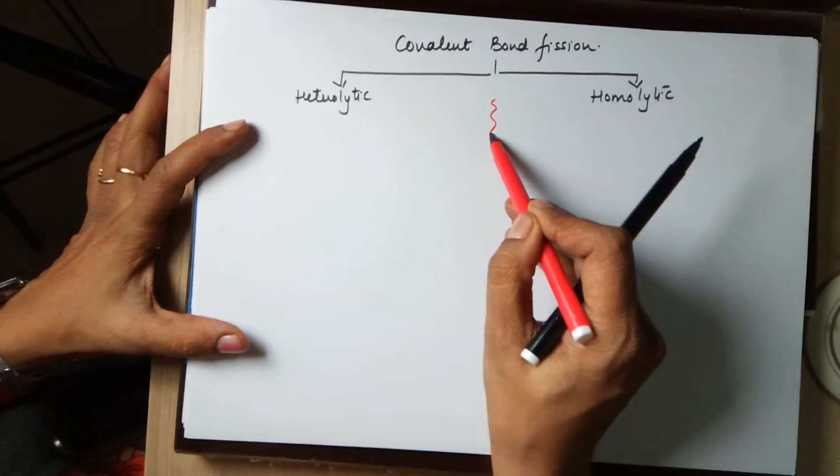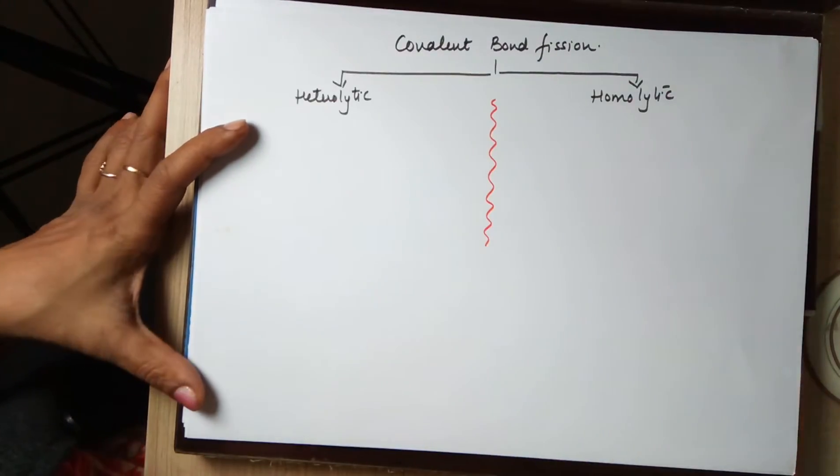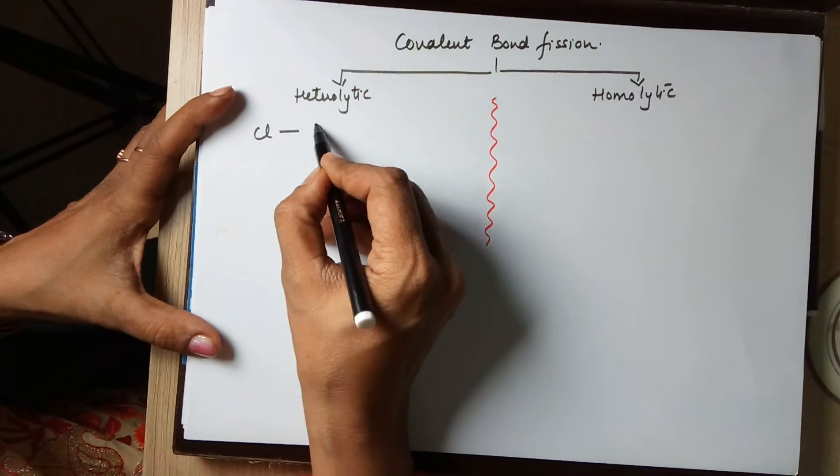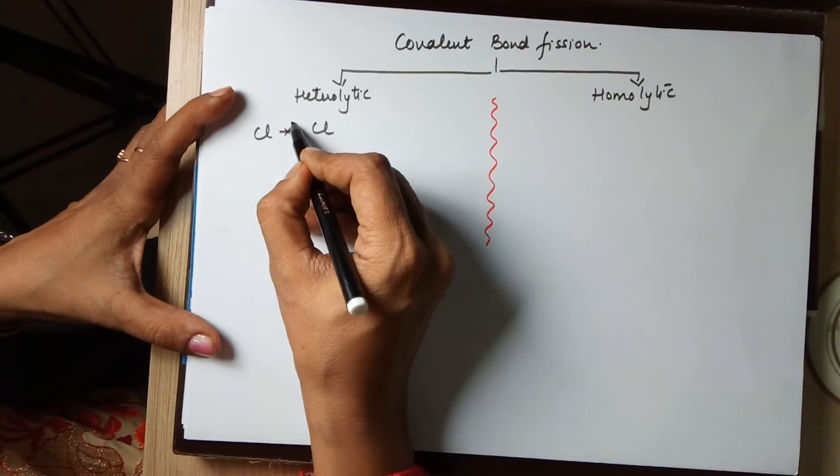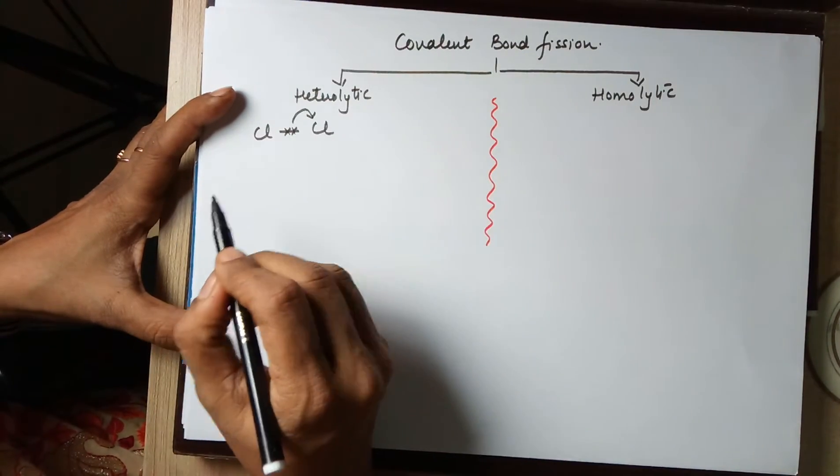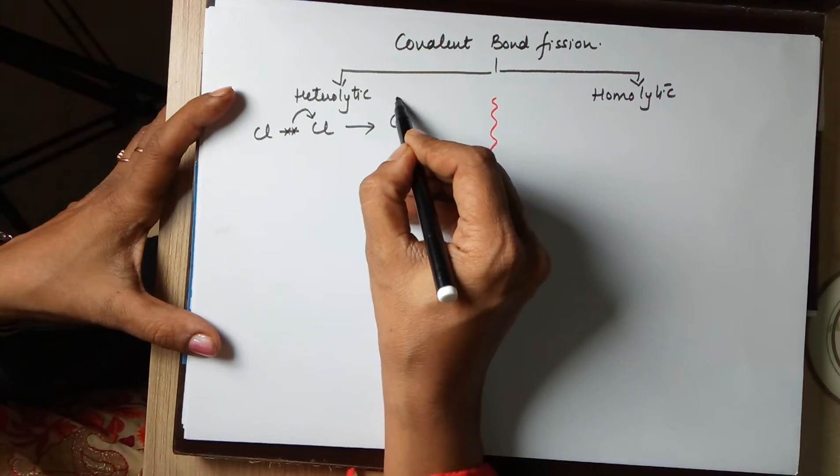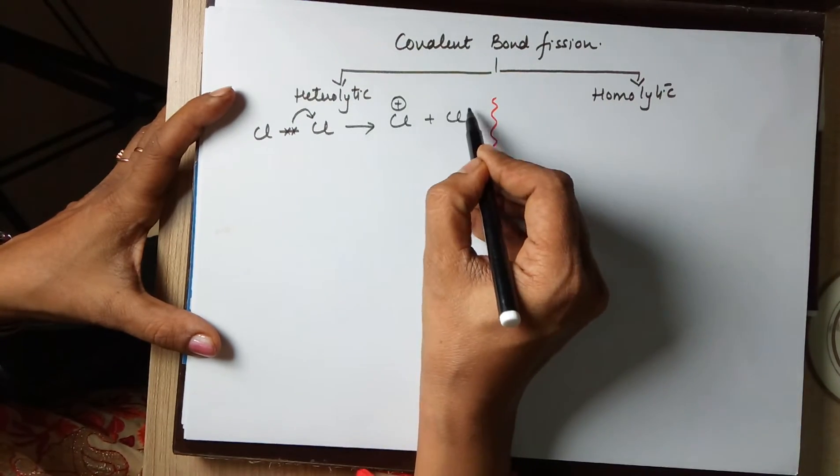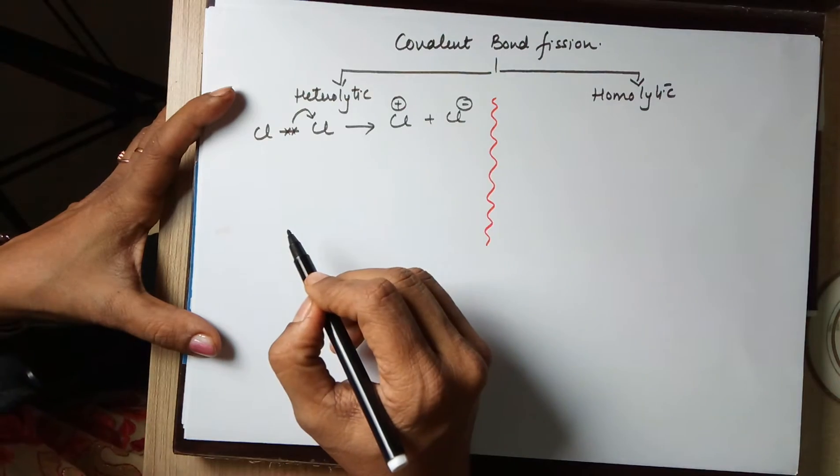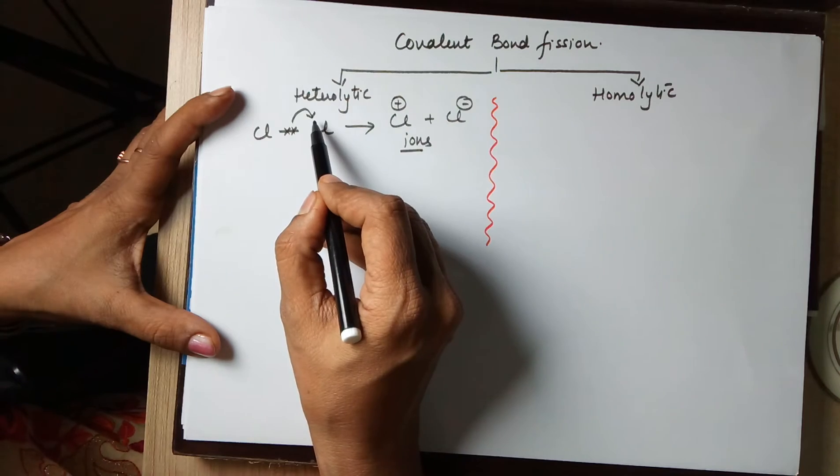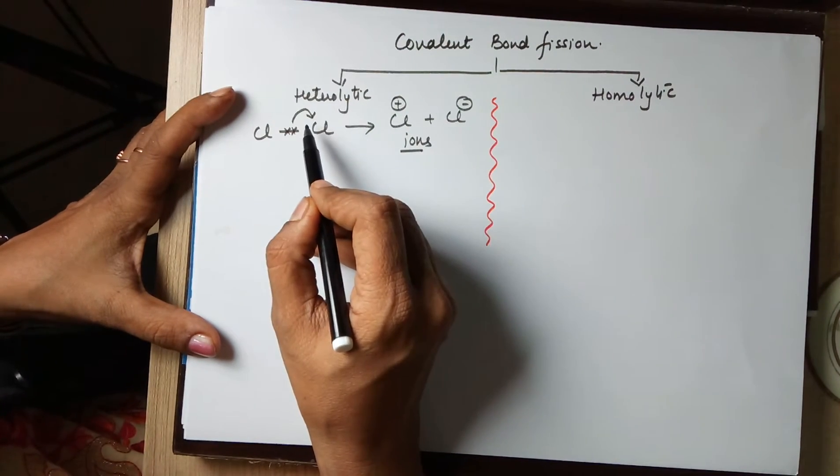These two ways are very different from each other. In case of heterolytic fission, the shared pair of electrons is taken away by one of them. That is represented by a normal arrow leading to one Cl generating a positive charge and the other Cl gets a negative charge. Hence you generally end up forming ions and electron transfer goes towards one of the two atoms.